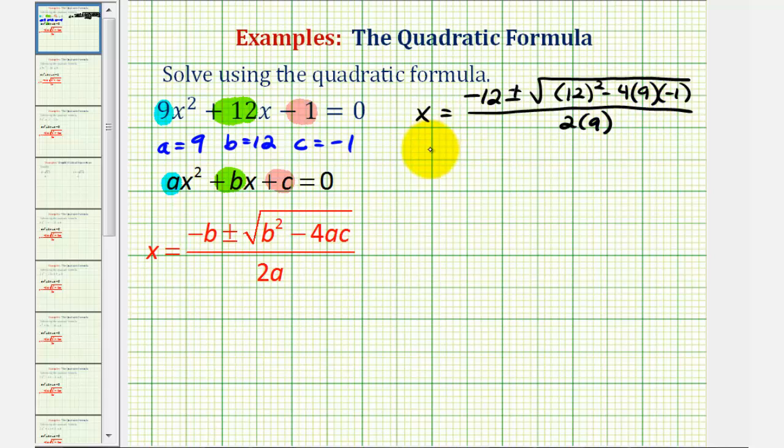Now we'll begin to simplify. So we have negative twelve plus or minus the square root. Twelve squared is one hundred forty-four. Then we have minus four times nine times negative one. That's minus negative thirty-six, which is the same as plus thirty-six.